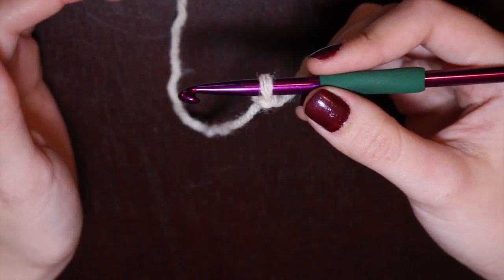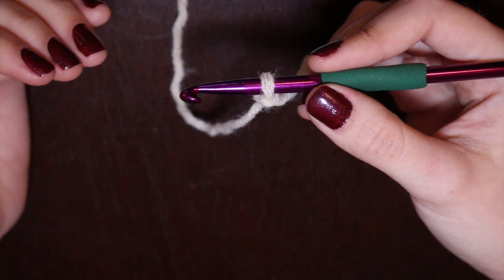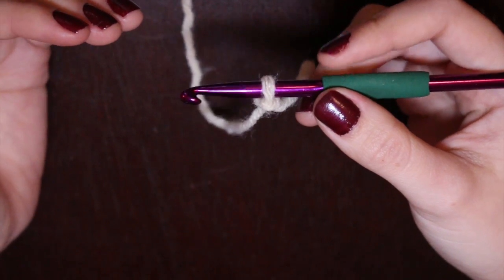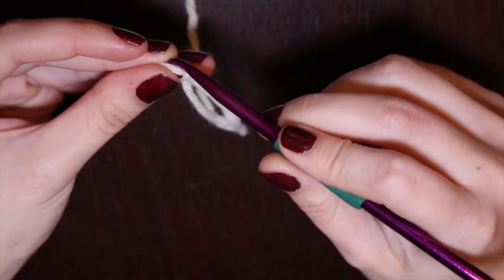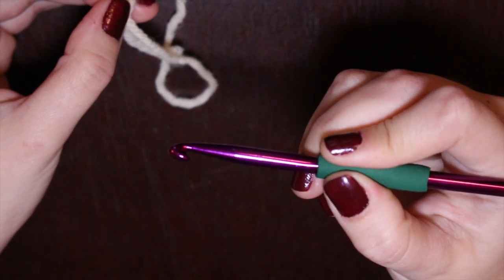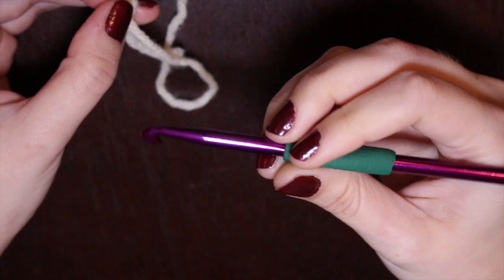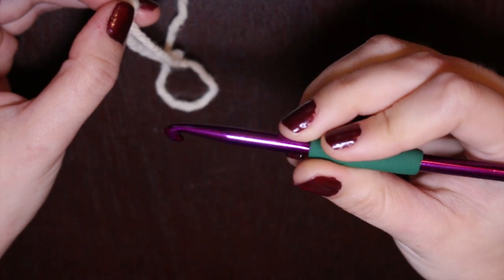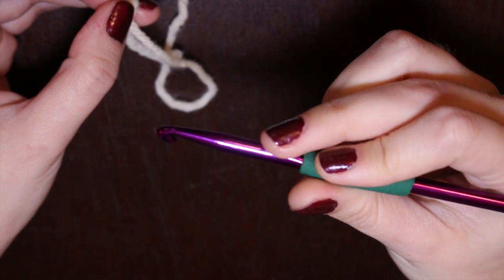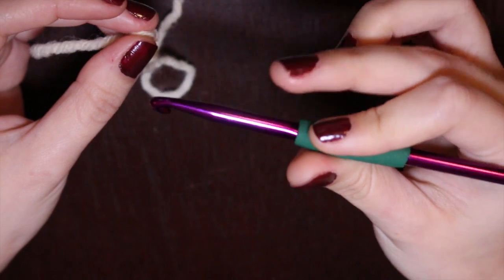There are two basic ways that crocheters in general hold their hook. As you can see, I hold mine like a pencil, although when I'm actually crocheting it's more like this that I hold it, and I tend to lift my finger for some reason as the yarn goes through it.